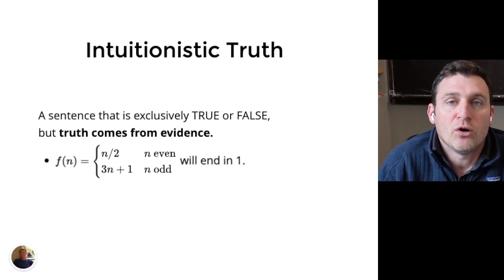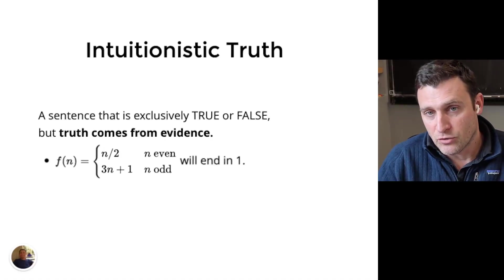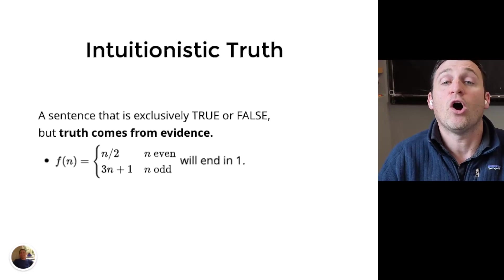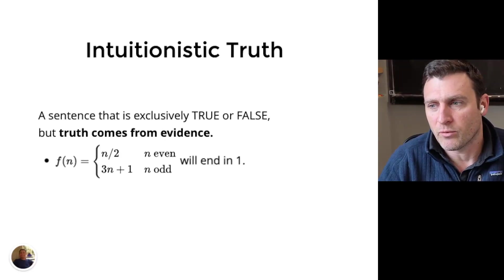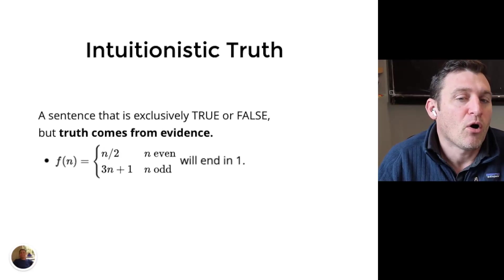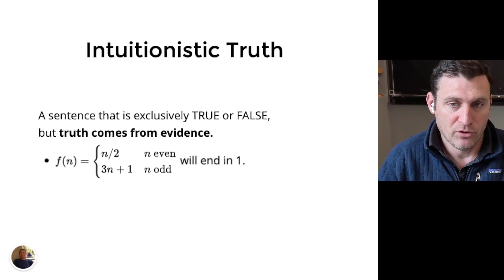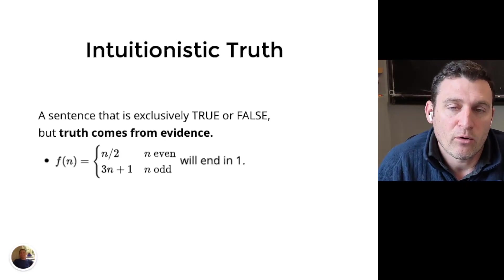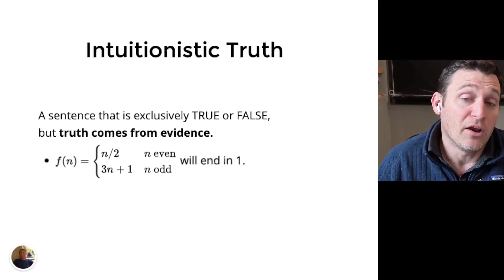So we have this conjecture. This is called the Collatz conjecture. The question is whether this function, if you keep applying it, will always end in the number 1. So far, no one has found an example which doesn't end in the number 1. But they also have no reason to know that it will end in the number 1. That's why it's called a conjecture. It's an unsolved problem. No one can give evidence whether this does or does not end in 1. So in an intuitionistic truths model, we would not be able to say that this is true or false.